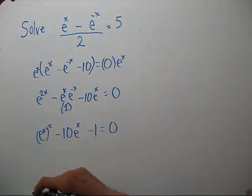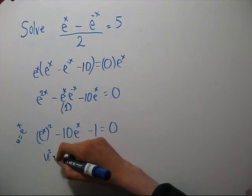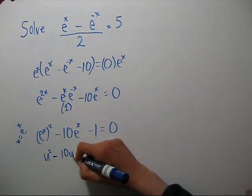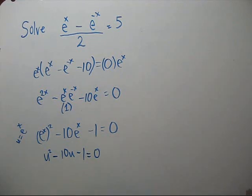Let's let u equal e to the x. So we have u squared minus 10u minus 1 equals 0. That does not factor nicely. Let's find out if it even has real solutions by taking the discriminant, which is b squared minus 4ac.